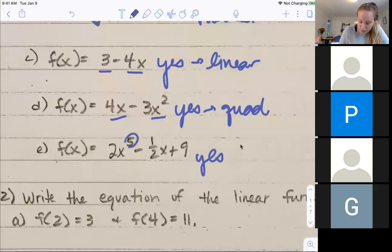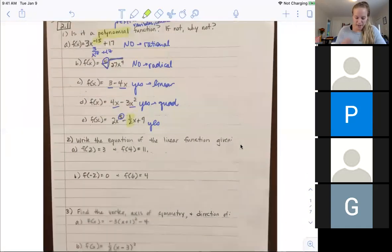And then this last one also is, and it's raised to the fifth power. I did try and throw you off a little bit with this fraction. Since the variables are positive and they are whole, this is a polynomial function.